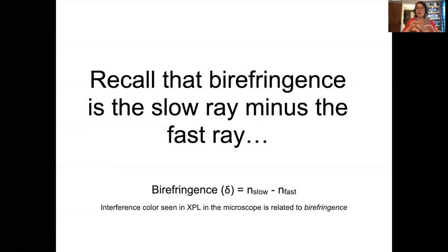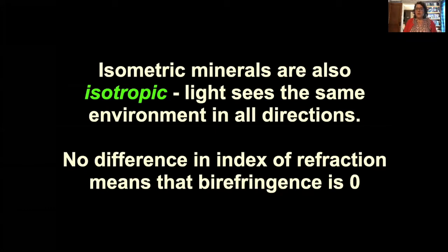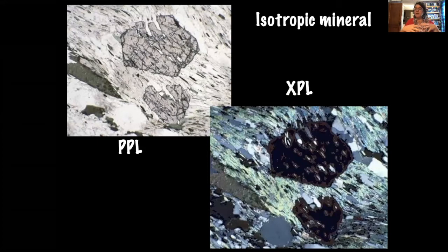Now that we've talked about the different slices that light can encounter when moving through isotropic and uniaxial minerals, let's talk about what that means for what we see in thin section. Birefringence is calculated by subtracting the index of the slow ray minus the index of the fast ray. The interference color seen in cross-polarized light is related to birefringence.